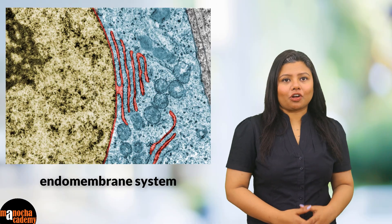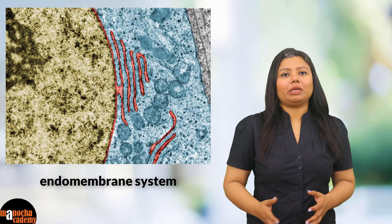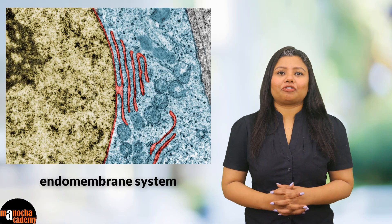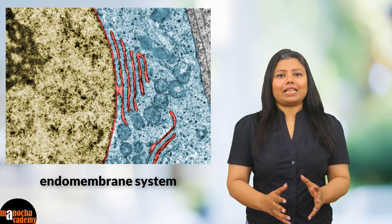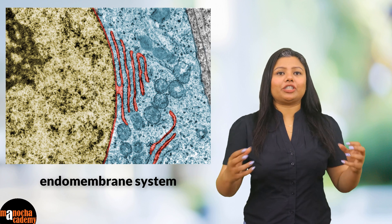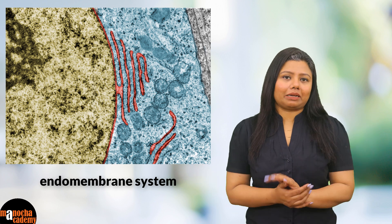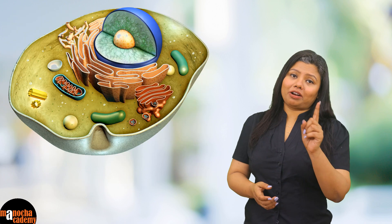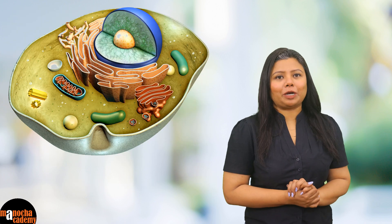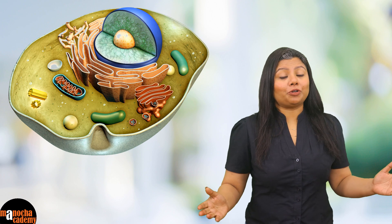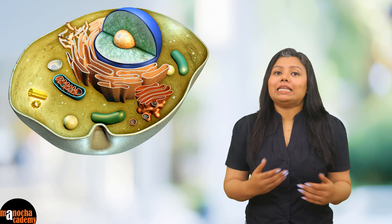A similar structure is present inside the cell, which is known as the endomembrane system. It consists of the endoplasmic reticulum, Golgi bodies, and so on. It divides a cell into several chambers where different types of reactions can take place. That is only one of the functions of the endomembrane system — we are going to talk about them in detail.